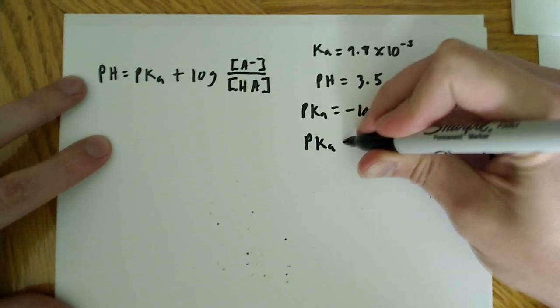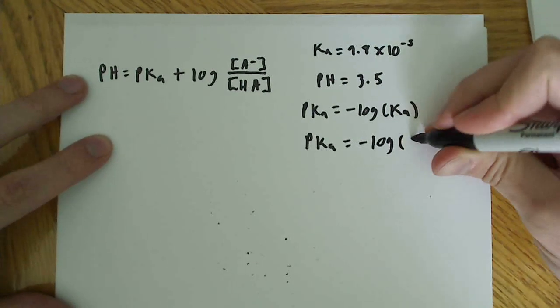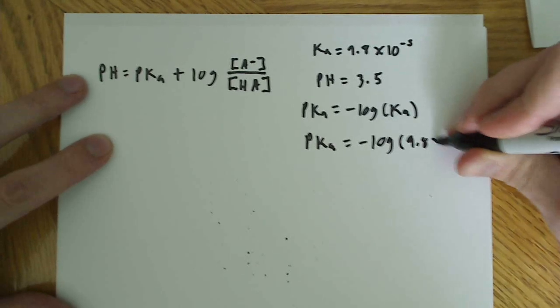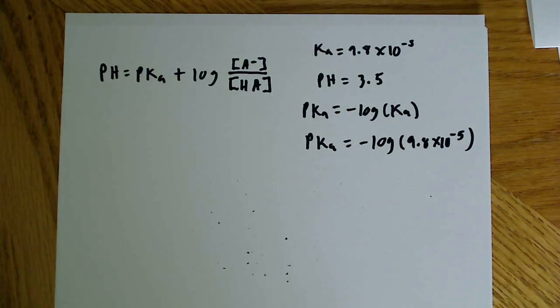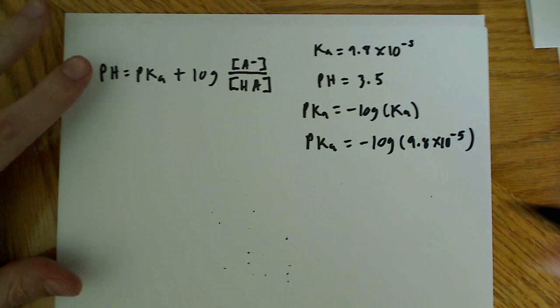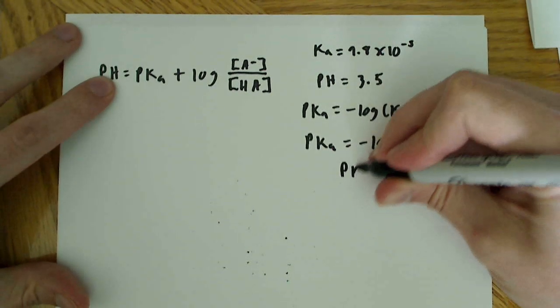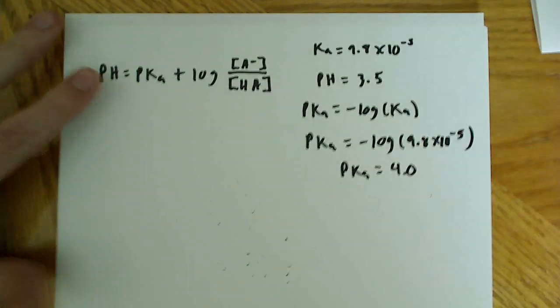So, pKa is equal to the negative log of 9.8 times 10 to the negative fifth. And when you do that on your calculator, you're going to find out that that comes out to about 4. So, the pKa is equal to 4.